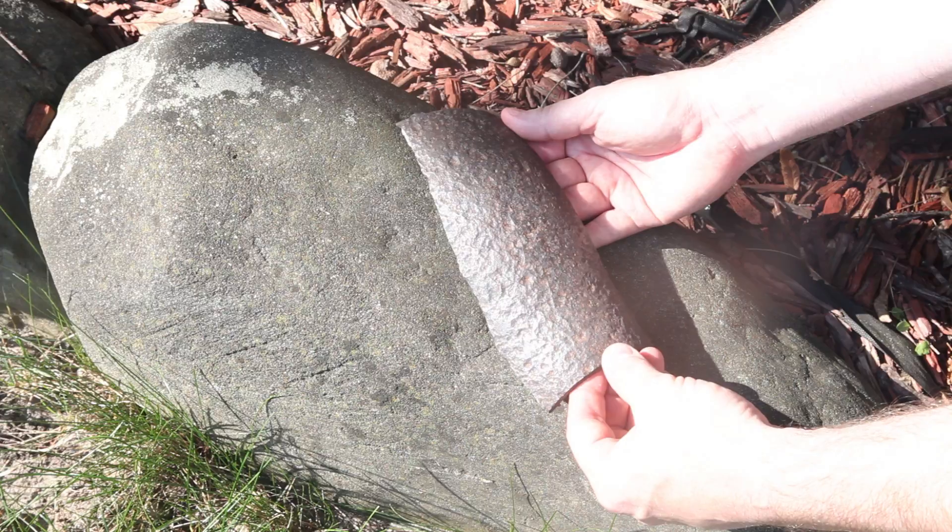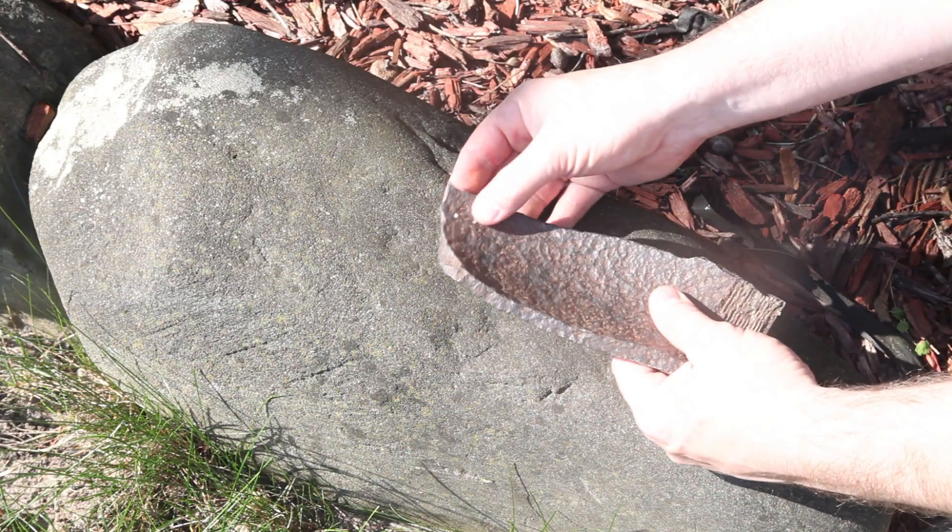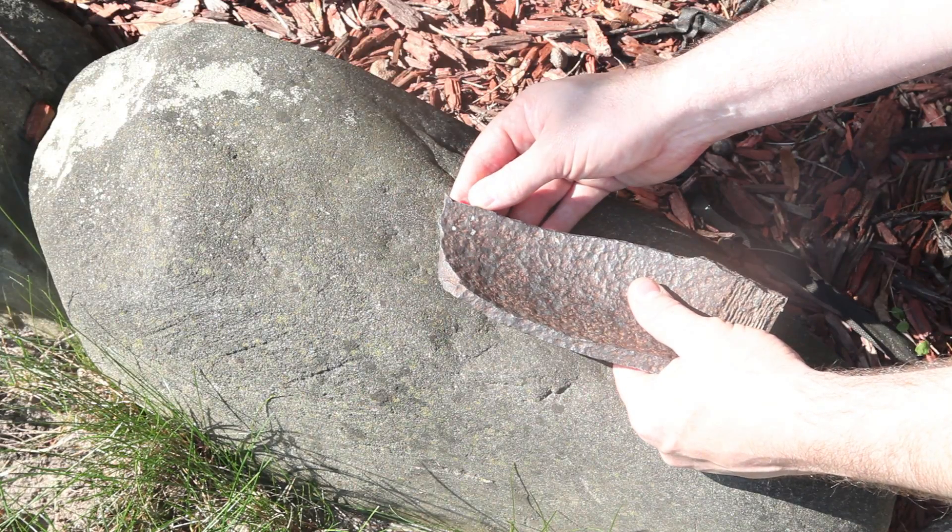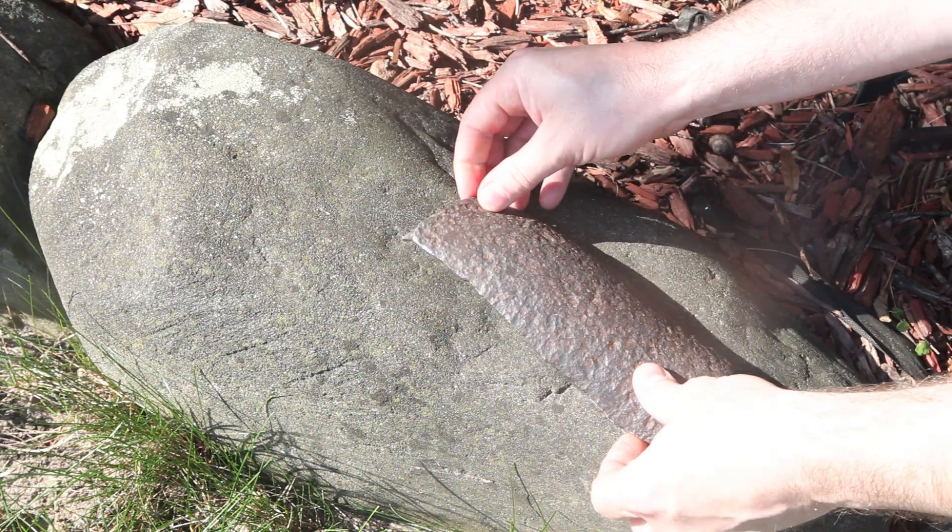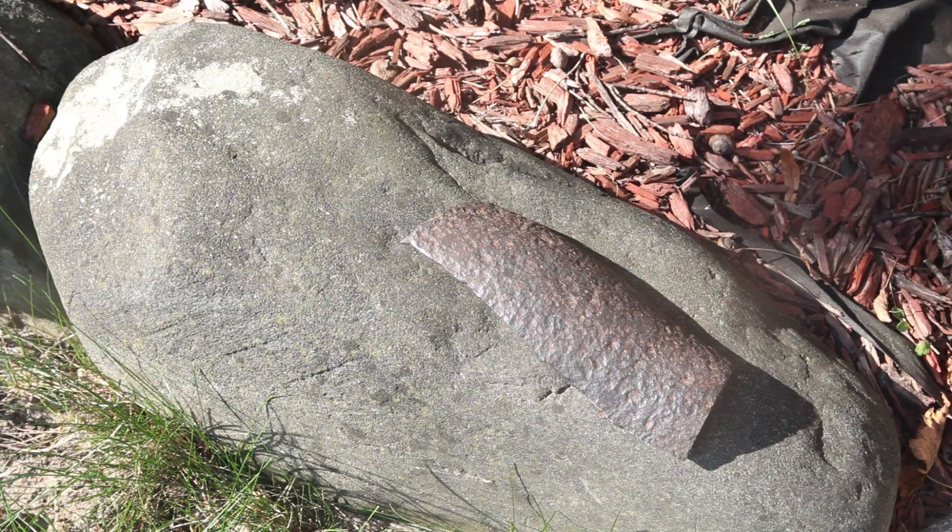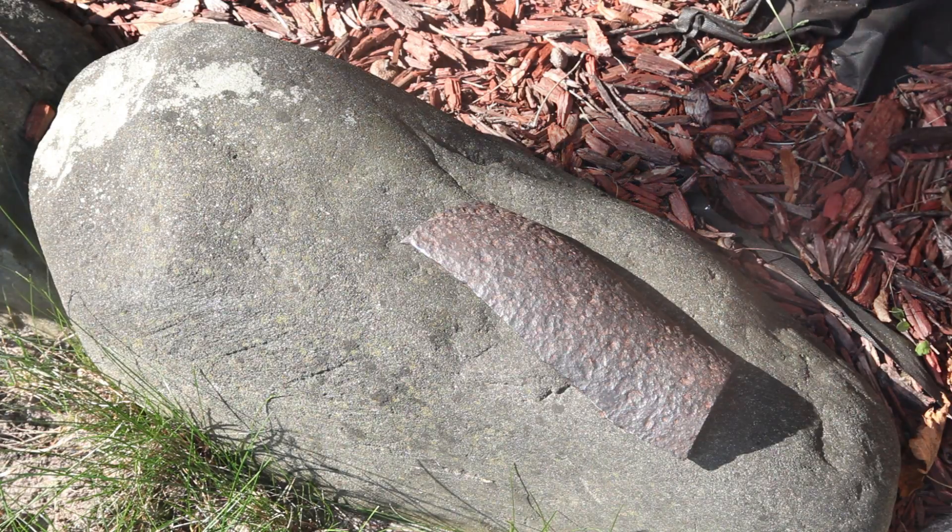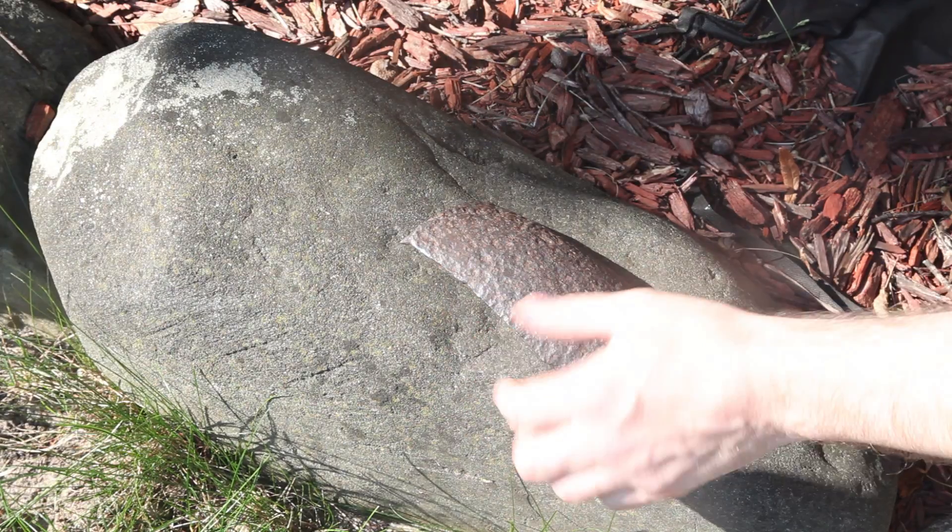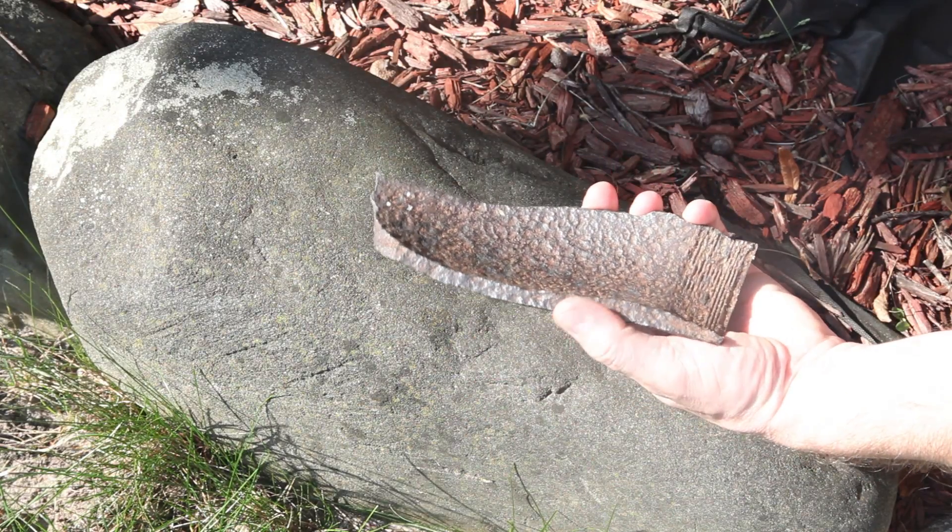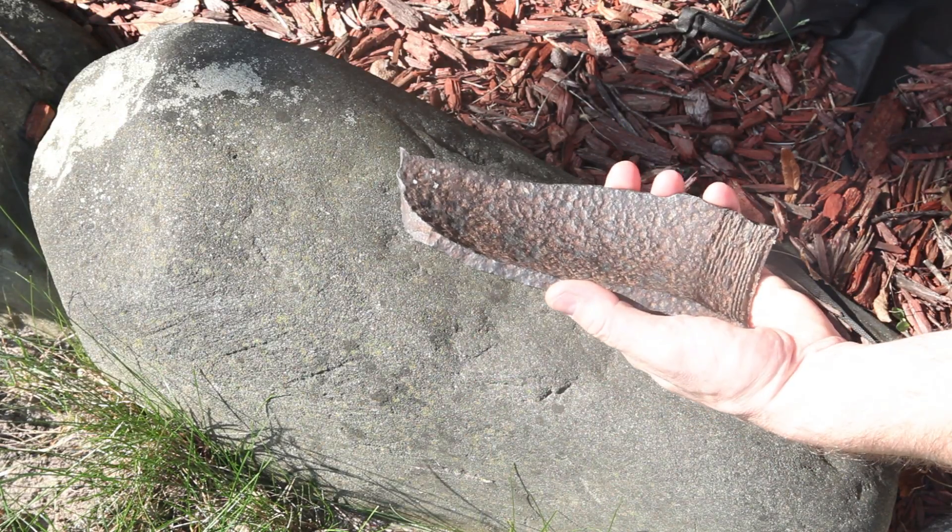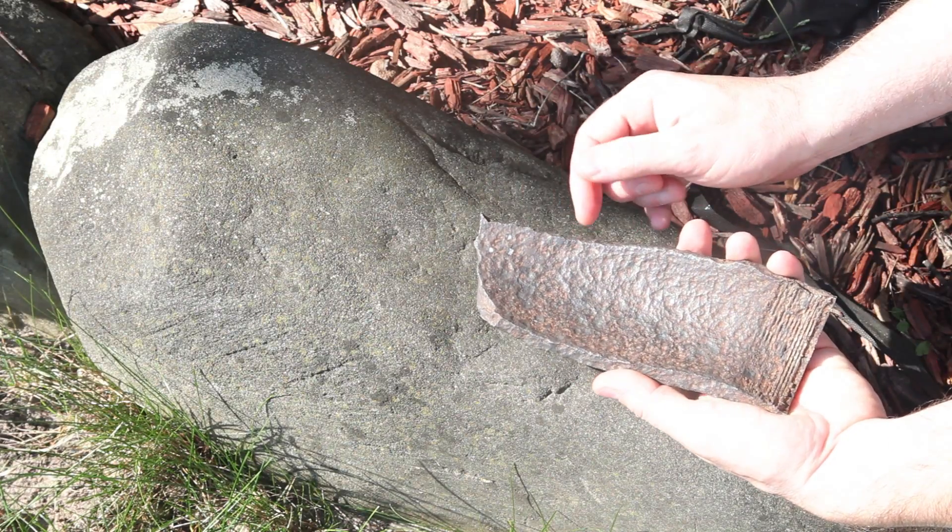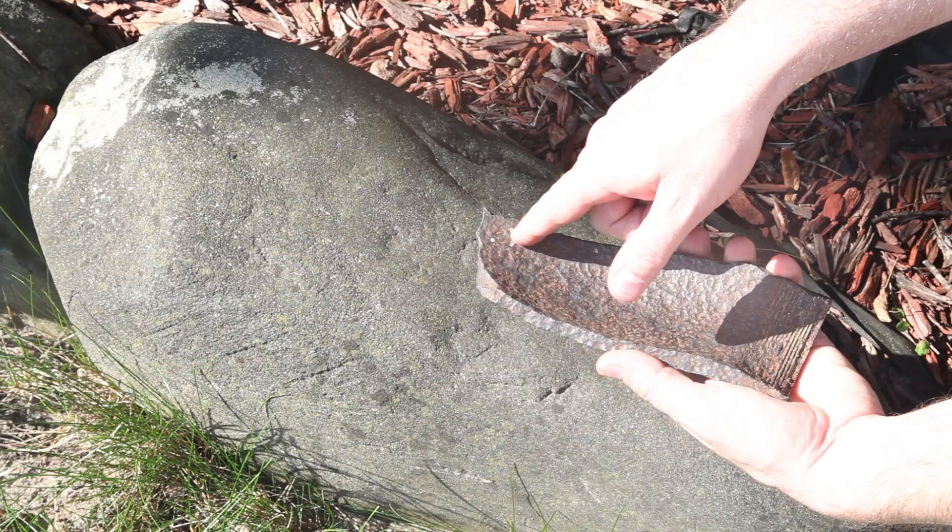Basically what I need to do is take a small piece of this and forge it flat, and then see if I can harden it. If I can harden it, then I can make a knife out of it. I just want to take a small piece because I don't want to take the whole shell and forge it flat, because if I can't harden it, then I want to keep it and put it in my office.